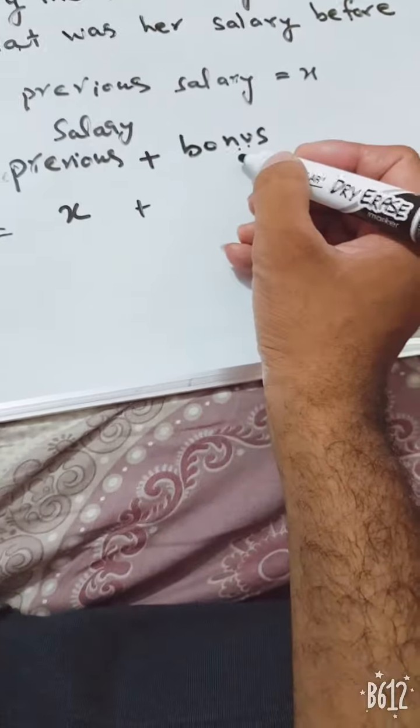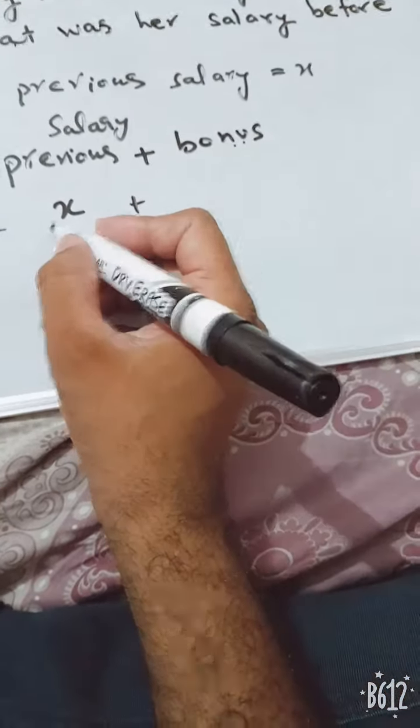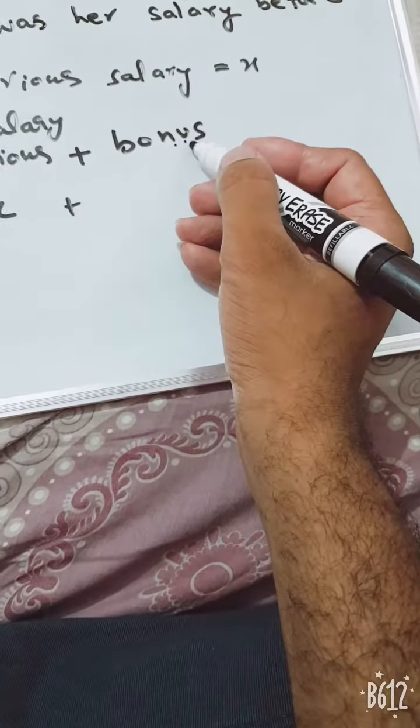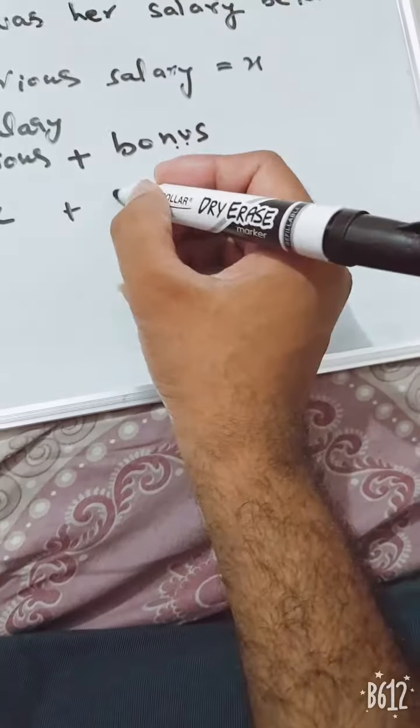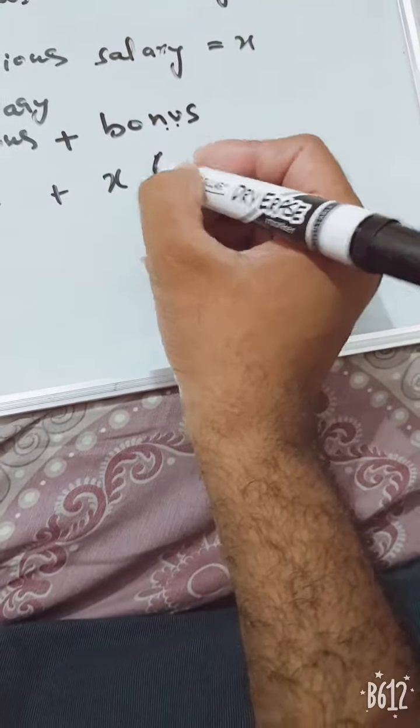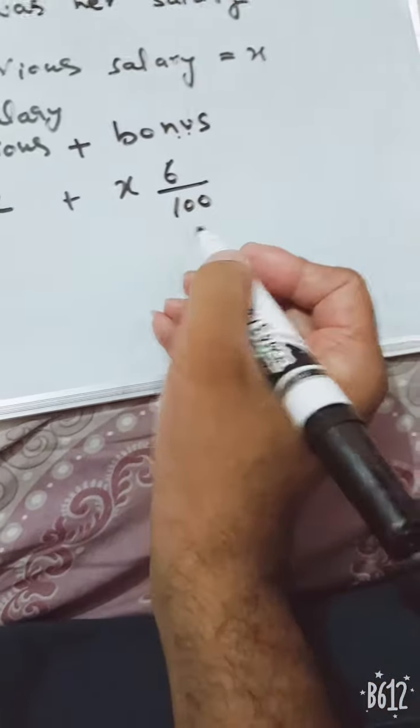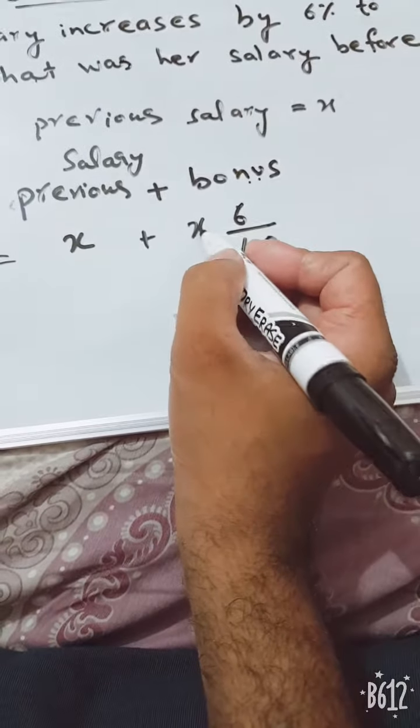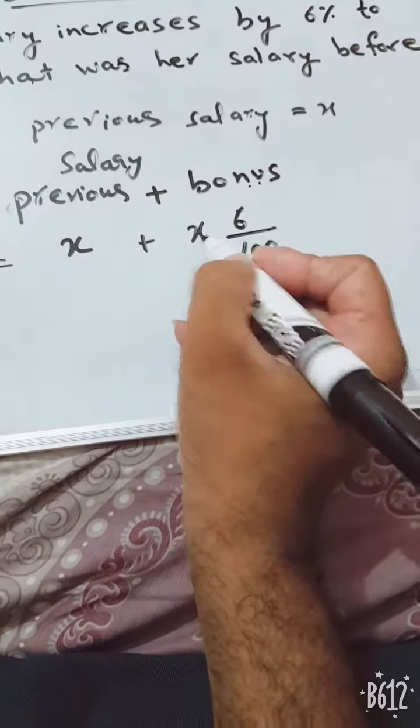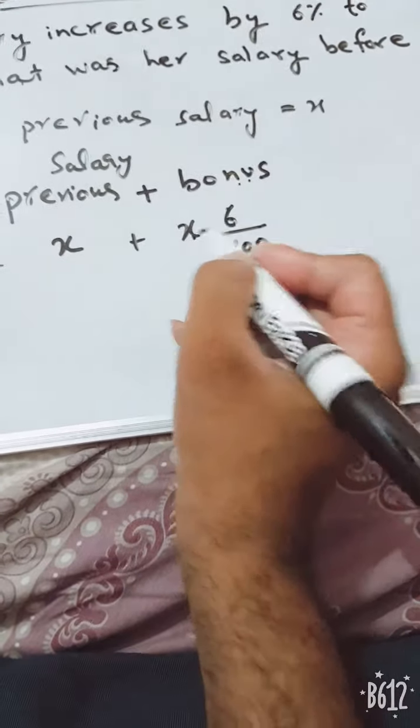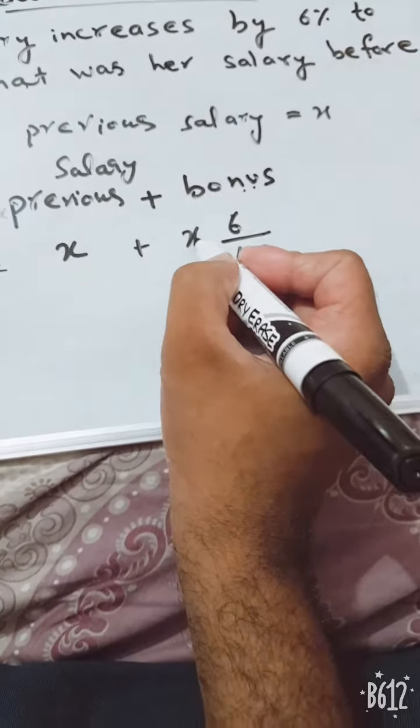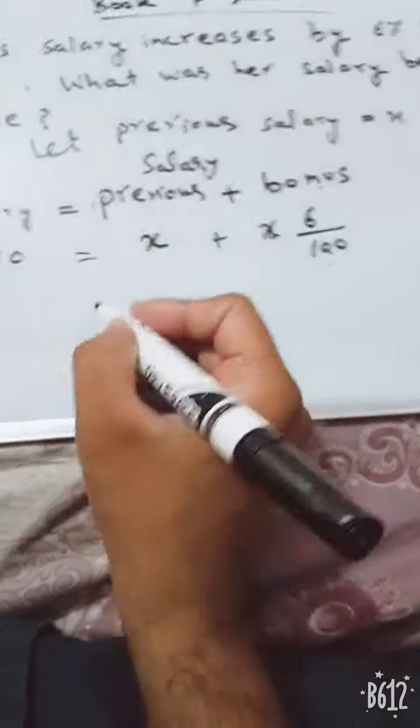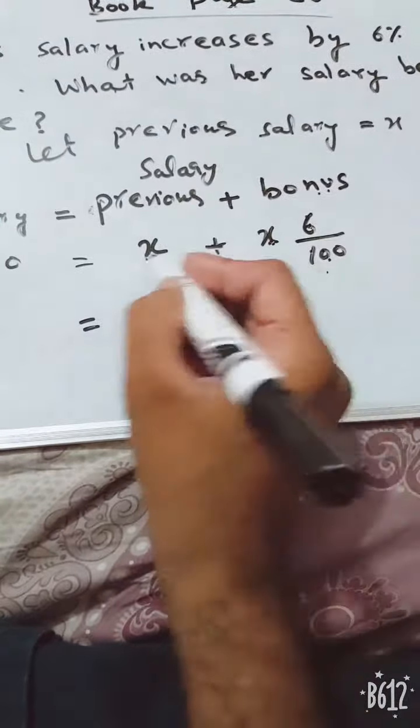And bonus is given on previous salary. How much percentage of the previous salary? 6% of the previous salary. This is the previous salary. We can find its 6% by multiplying previous salary by 6%. And now our duty is to add both of these.